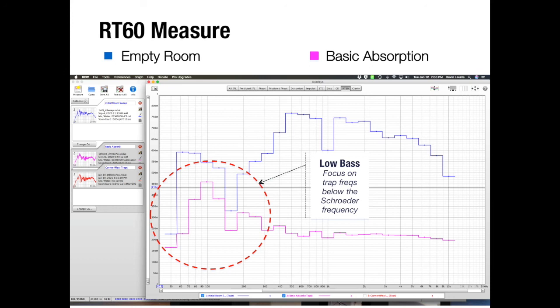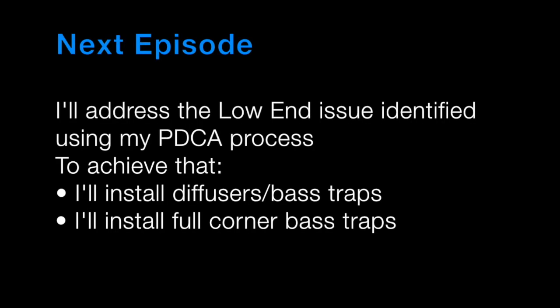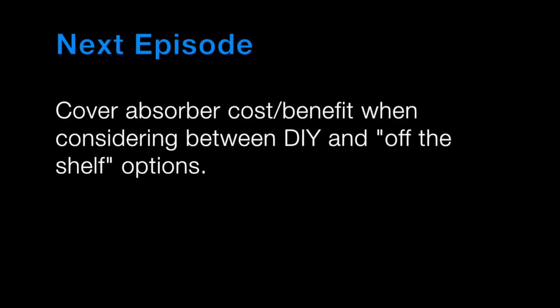So in the next episode I will address this new low-end challenge that's been identified through my PDCA process. To achieve that, I'll be installing two acrylic diffuser bass traps that I built on the back wall. Then I'll build full height corner bass traps on the front wall. Lastly, I'll open the topic and cover in detail the cost benefits of treatments, kind of referring to DIY versus buying it off the shelf. So until next time, thanks for watching.